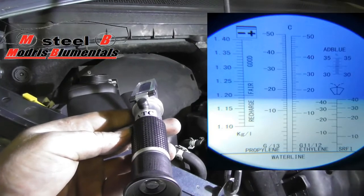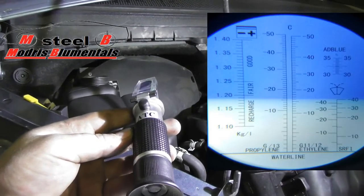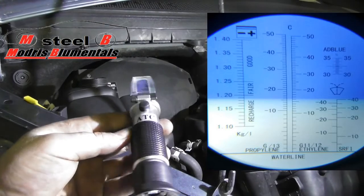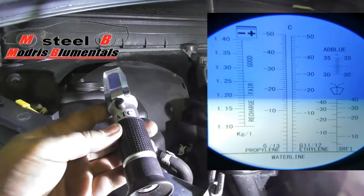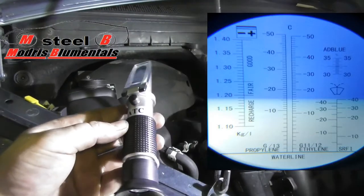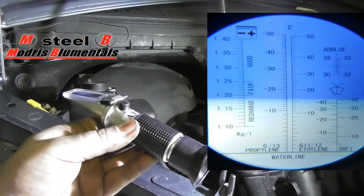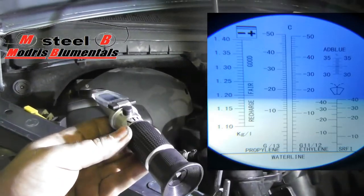Other things you can measure with this tool include car battery density, windscreen washing fluid, and adblue test. So basically you can test four things with this device.